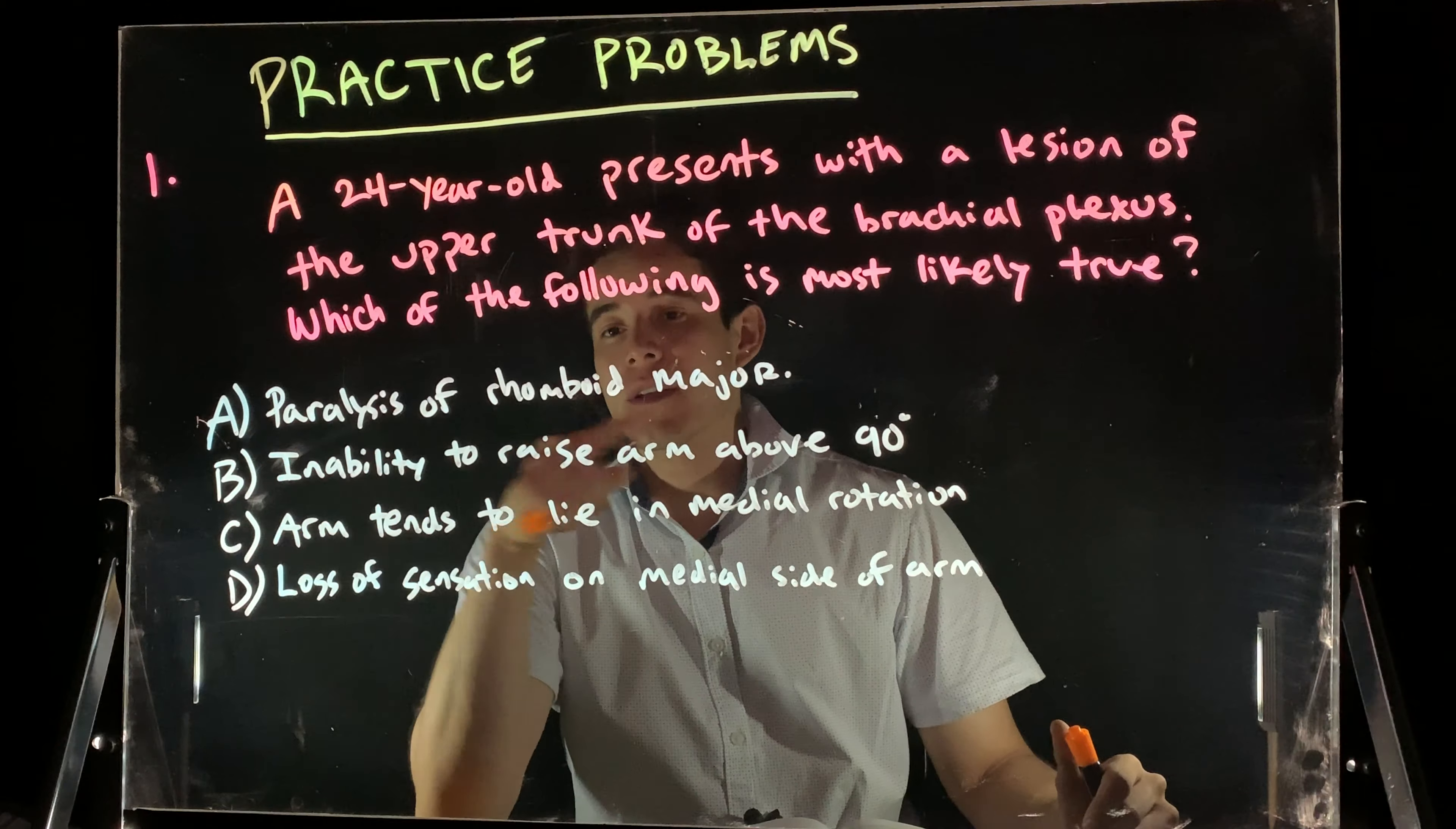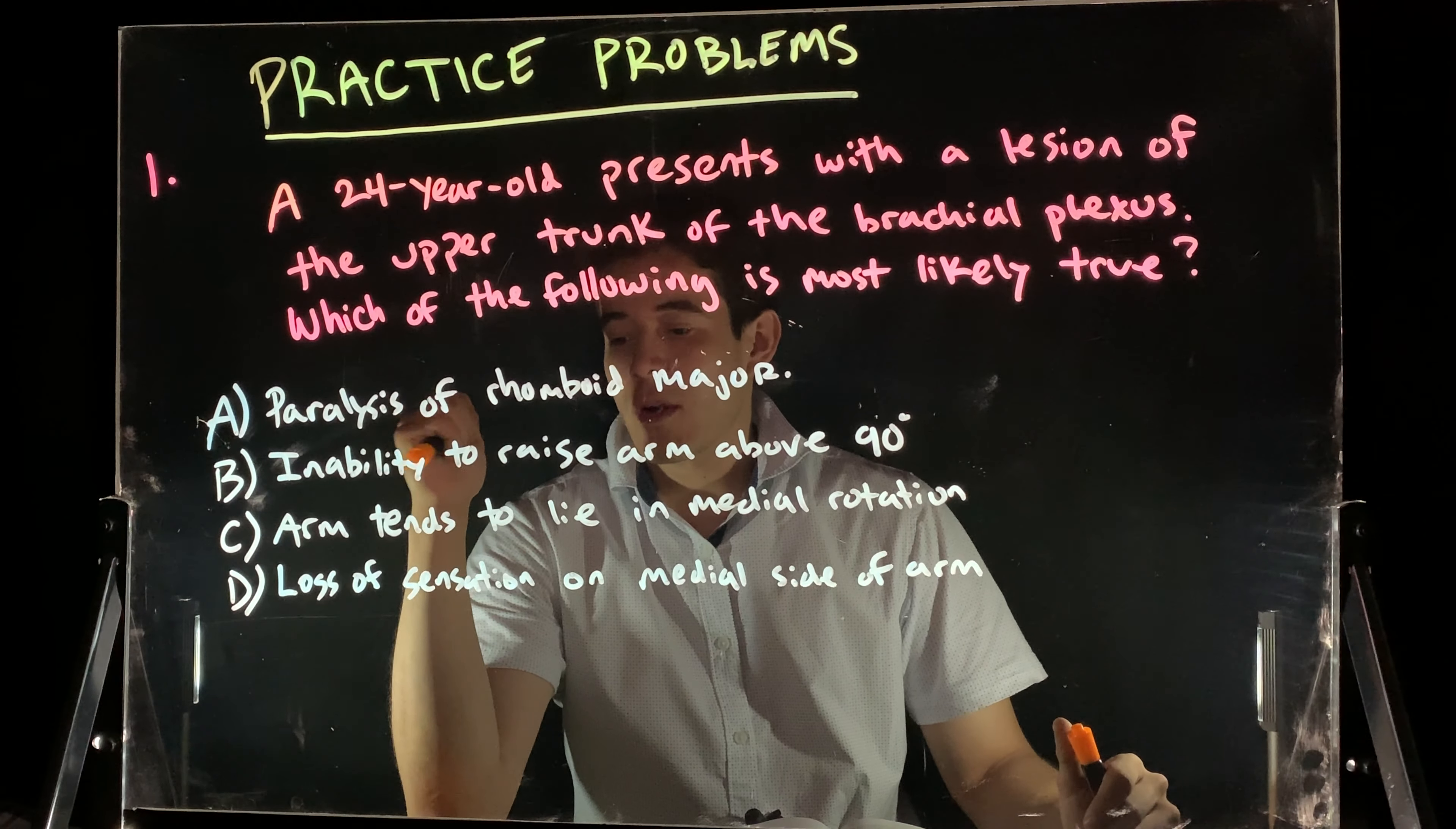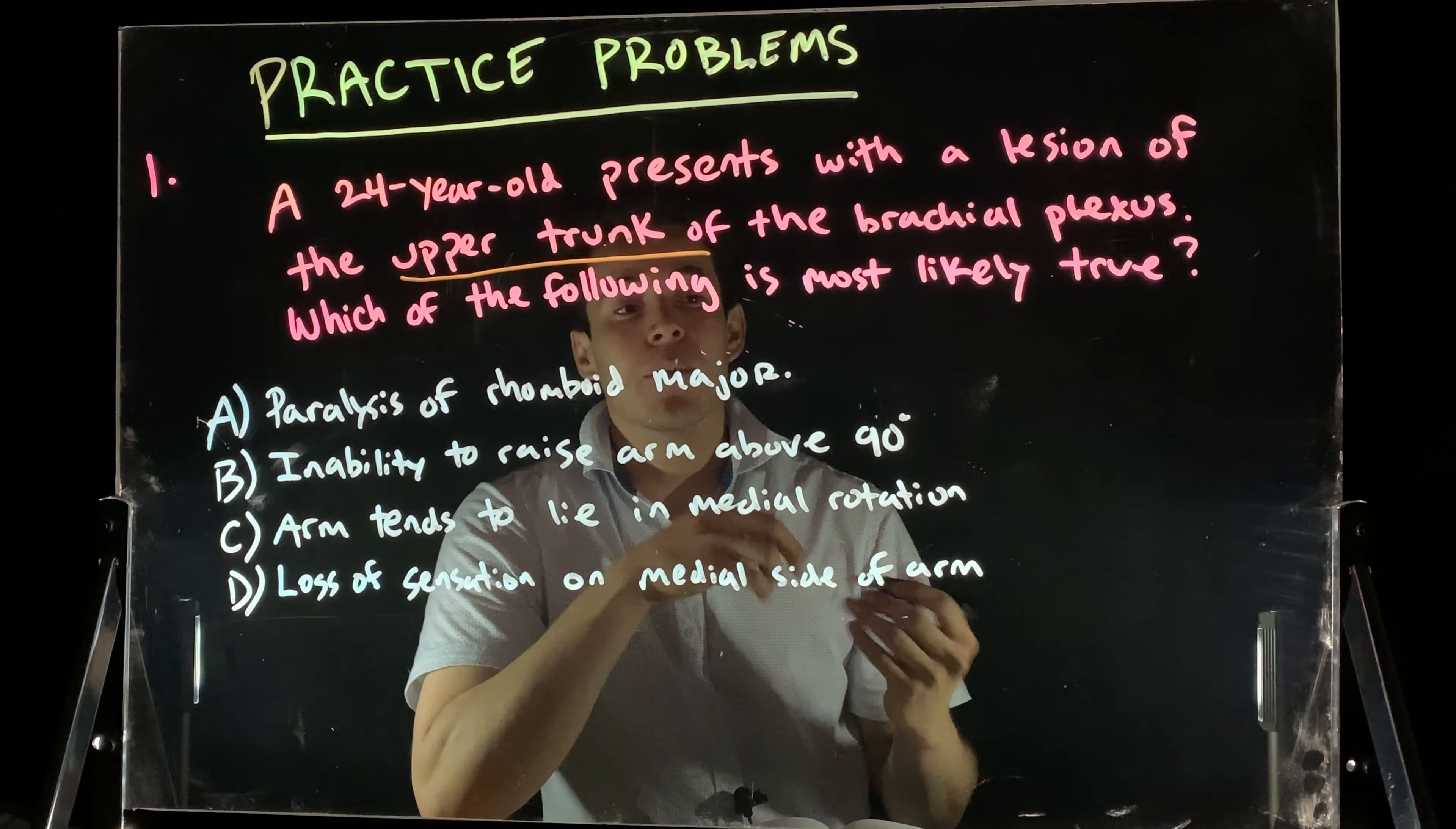So, our answer choices here are paralysis of the rhomboid major, inability to raise the arm above 90 degrees, the arm tends to lie in the medial rotation, and then we also have loss of sensation on the medial side of the arm. Let's break down each of these. Here we have upper trunk. I'm thinking of upper trunk.